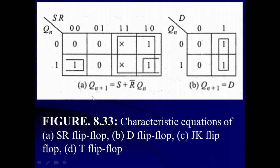Now we can prepare a Karnaugh map for the SR flip-flop. Qn+1, the next output, is a function of inputs S and R as well as the present output Qn. There are three variables, and S and R are arranged horizontally with four combinations: 00, 01, 11, and 10. The present output Qn has two values, 0 or 1. So there are 2³ = 8 locations: M0, M1, M2, M3, M4, M5, M6, and M7 — the minterms corresponding to the sum-of-products equation.